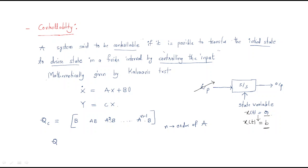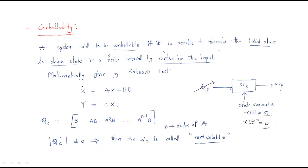After forming the QC matrix, we find its determinant. If the modulus of QC is not equal to zero, then the system is called controllable. So by using the state equations and output equation we form this matrix, and if the determinant is non-zero, the system is controllable.